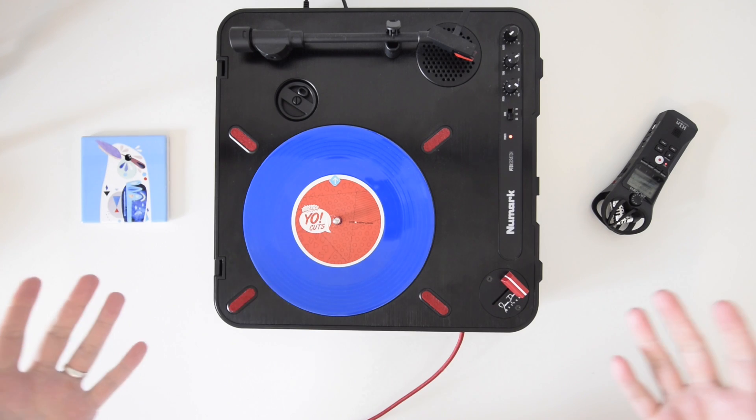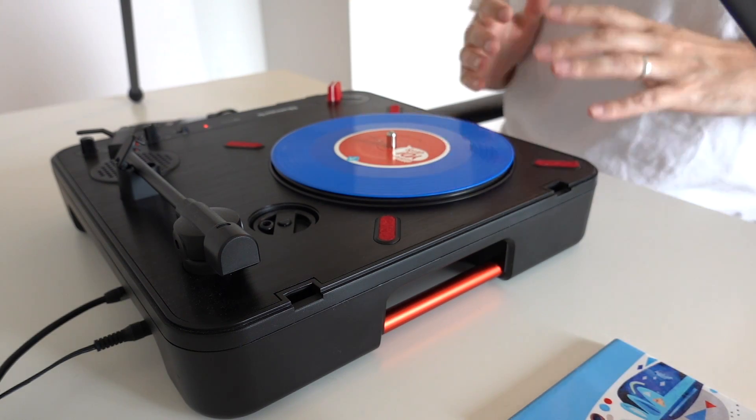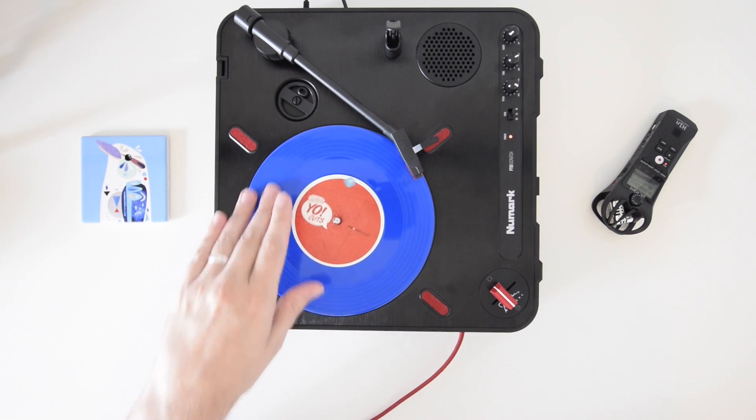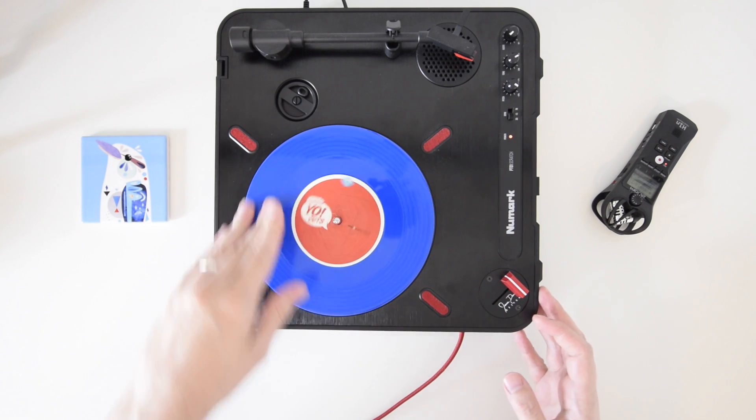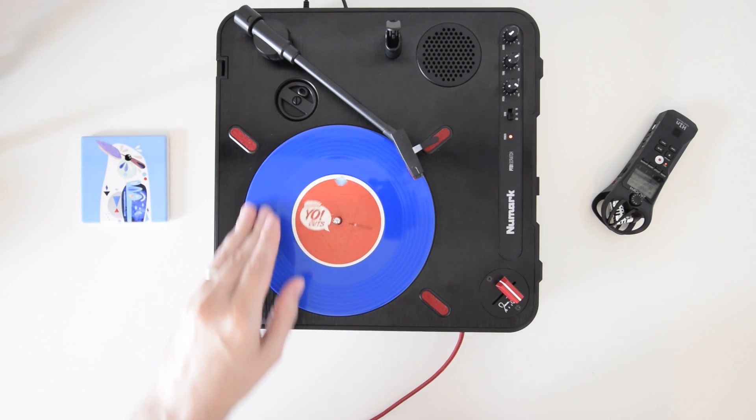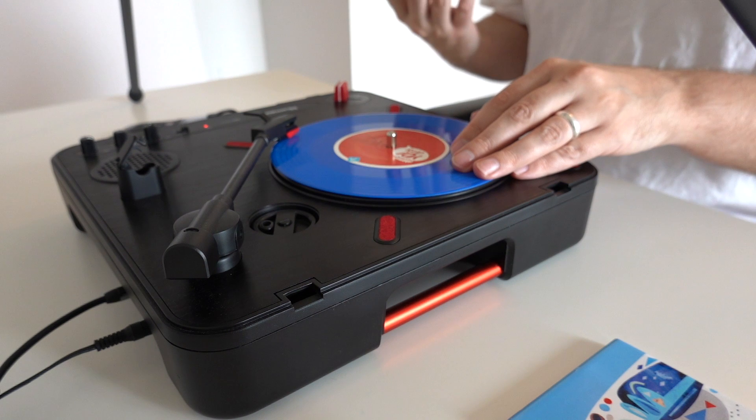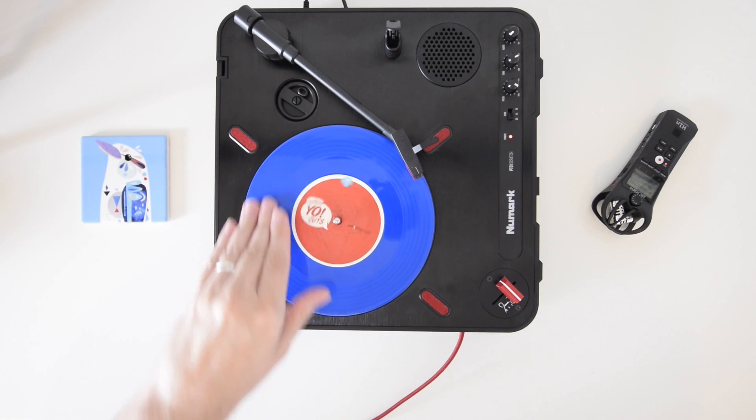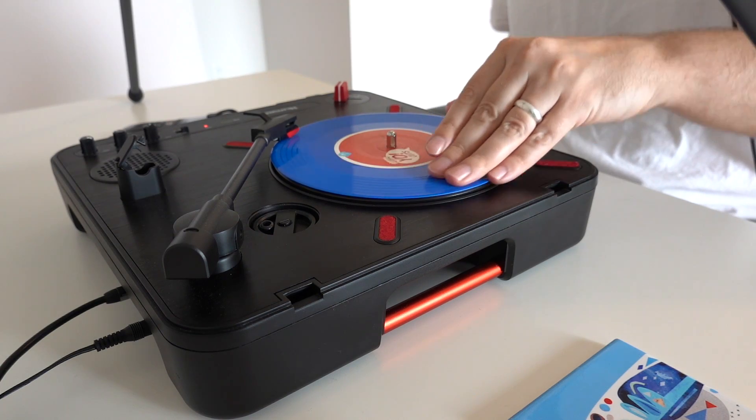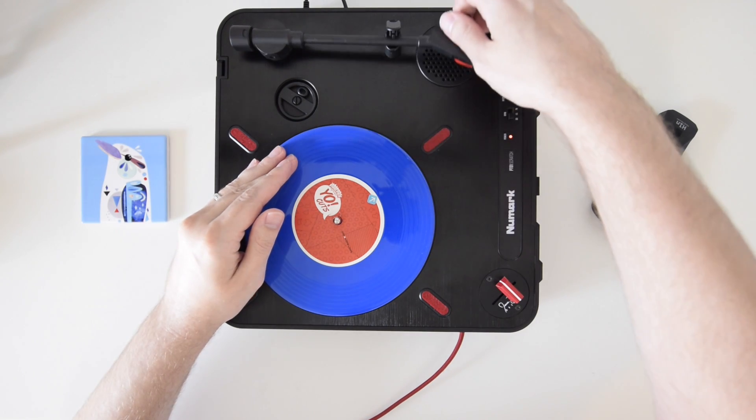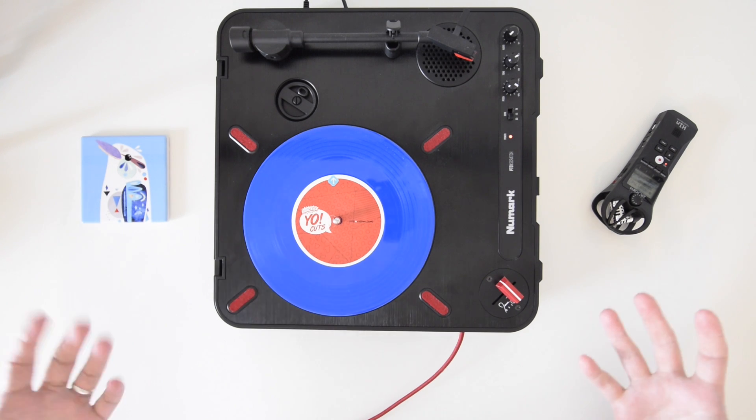All right well with all that done we can finally get into some actual scratching. Now the first scratch that everyone learns is called the Baby Scratch and it sounds like this. The method behind it is simply hand on the record moving it back and forth. You don't use a fader, as simple as it gets. Now you can do it fast. You can do it slow. And basically you want to use those different rhythms to come up with interesting patterns. So let's put that on a beat. All right so that's our first technique done and dusted. It's super simple, might be easy for you, but this is where it all starts. This is where every other scratch is based on.